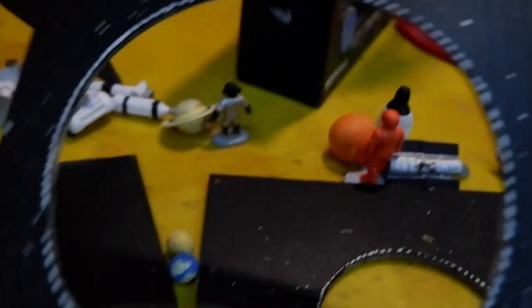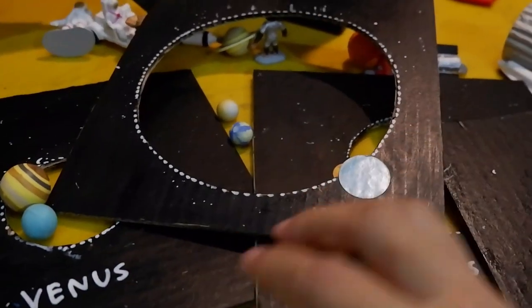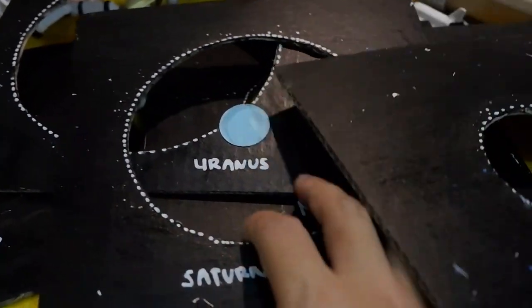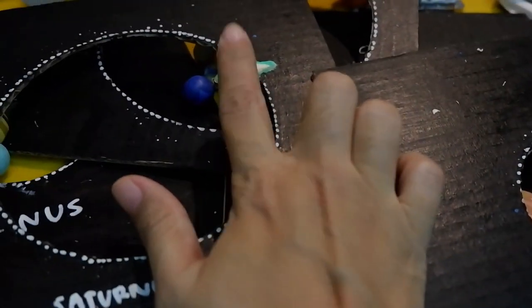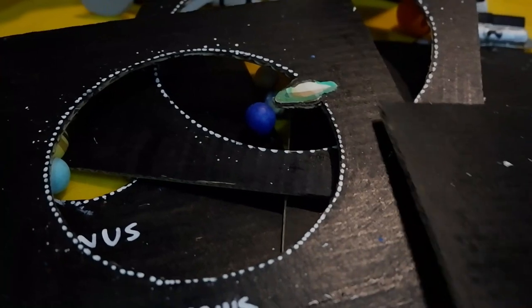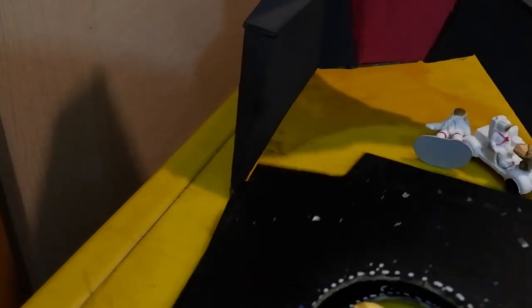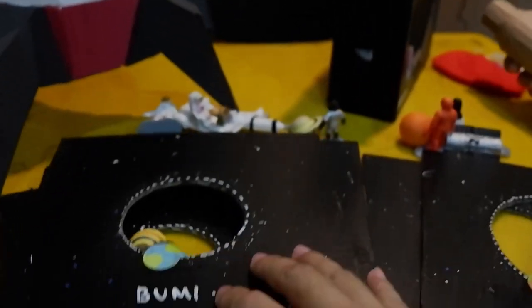Jadi buat peraganya gak usah beli teman-teman, bikin aja kayak Caca nih, dia bikin dari kardus. Ini yang ada cincinnya. Nah yang ini pasti tahu, ini apa? Bumi, tempat siapa hidup? Orang. Kamu hidupnya di mana? Indonesia. Di planet apa? Earth.